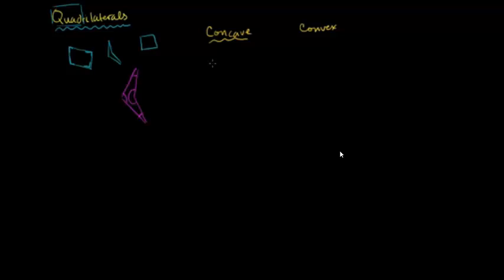One way to define concave quadrilaterals — let me draw it a little bit bigger — is that a concave quadrilateral has an interior angle that is larger than 180 degrees. So, for example, this interior angle right over here is larger than 180 degrees. It's actually a pretty simple proof to show that if you have a concave quadrilateral with at least one interior angle larger than 180 degrees, then none of the sides can be parallel to each other.